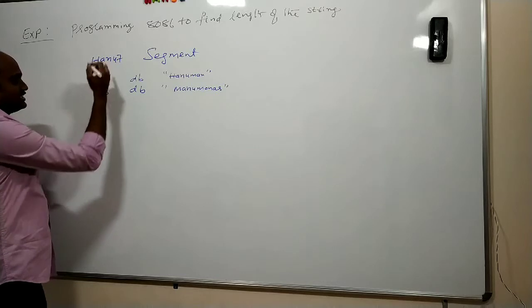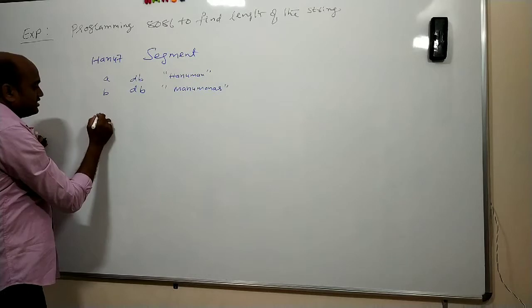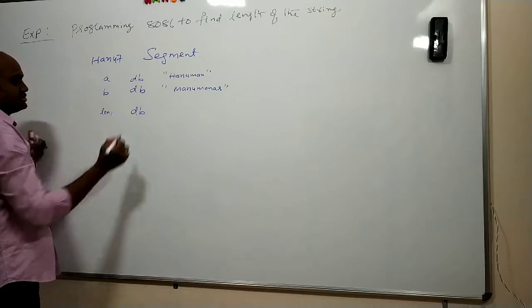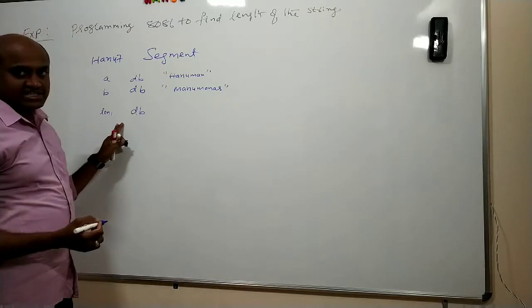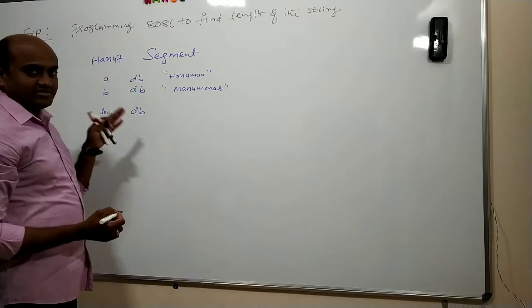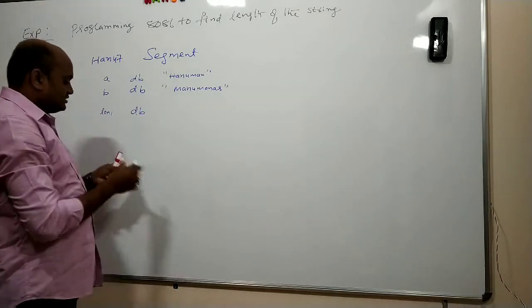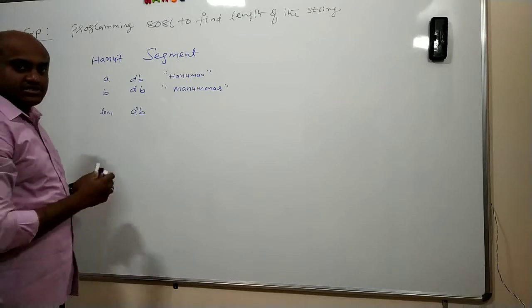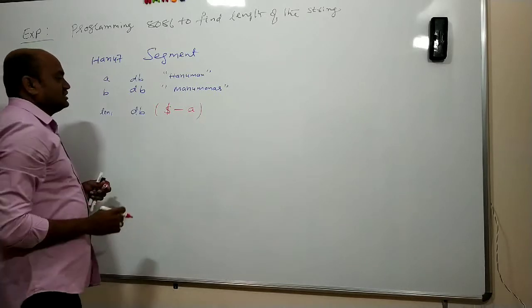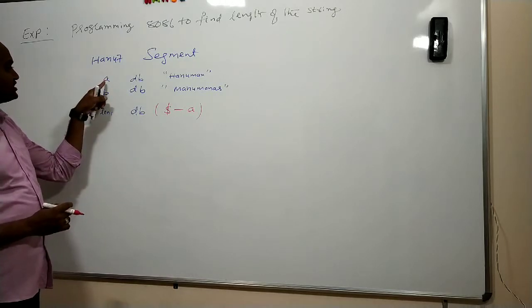So in the data segment itself, after defining the given two input strings, we will use one more variable len1. It is also of a byte size. I am allocating byte size to store this variable. I mean to store some data which is of byte size and I want to access with the name len1. So here I have a command. The command is dollar minus name of the string. So if I write like this, dollar minus a, this dollar minus a will return the length of the string a.